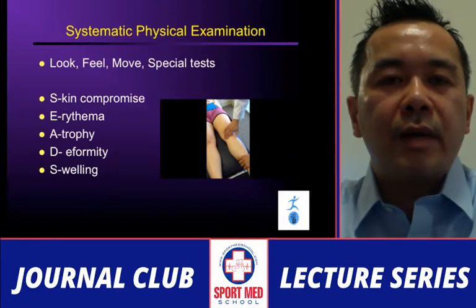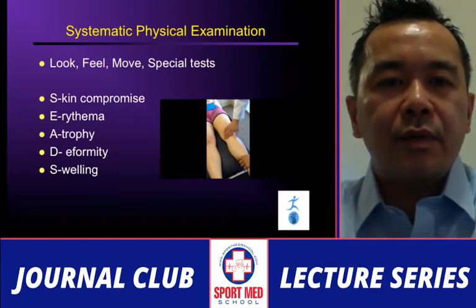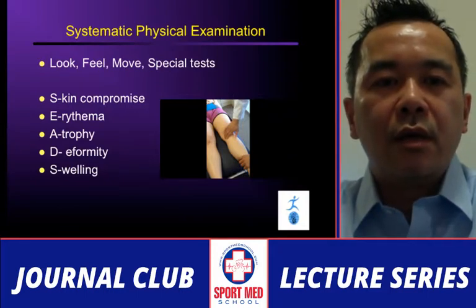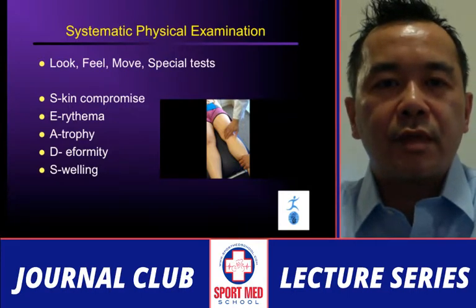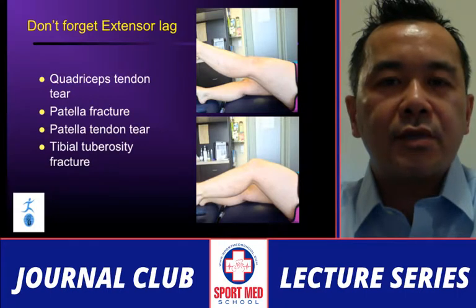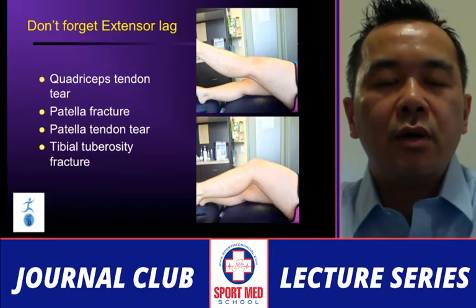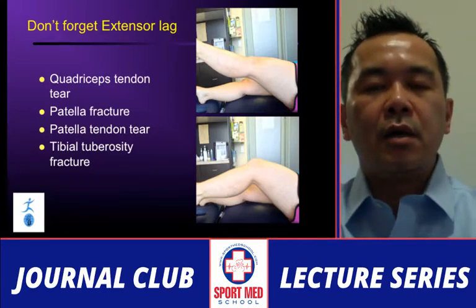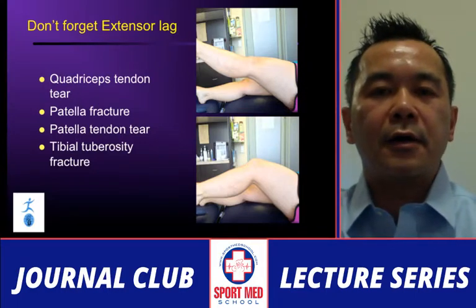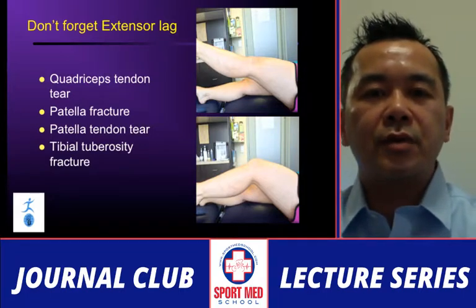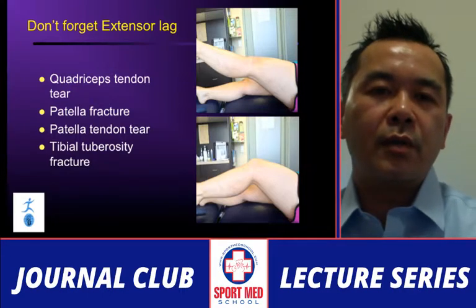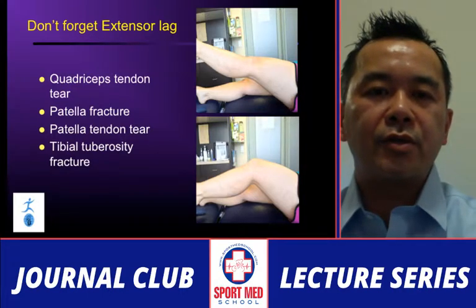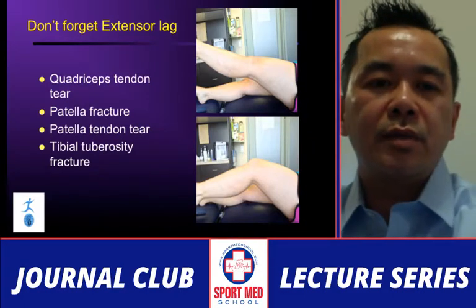Look for skin compromise, erythema, atrophy, deformity, and swelling — those are my first steps for inspection. The extensor lag is demonstrated by asking the patient to straighten the knee, supporting the ankle, then supporting the calf and letting go of the ankle to ask the patient to extend and keep the extension. If they have extensor mechanism rupture — quadricep tendon violation, patellar fracture, patellar tendon tear, or in pediatric patients a tibial tuberosity avulsion — they are unable to do this maneuver.